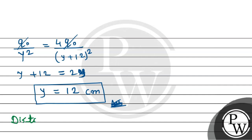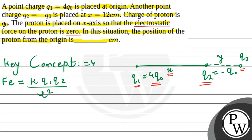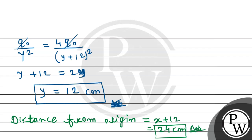So distance from origin will be X plus 12, that will be 12 plus 12, that is 24 cm. And this is going to be the required answer of this question, जो के हमने find out किया है by using the concept of electrostatic force. This is the required solution. I hope you understood. Best of luck.